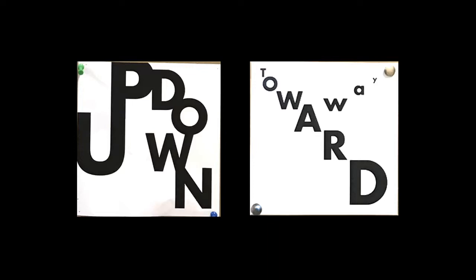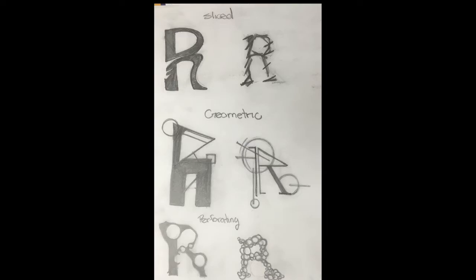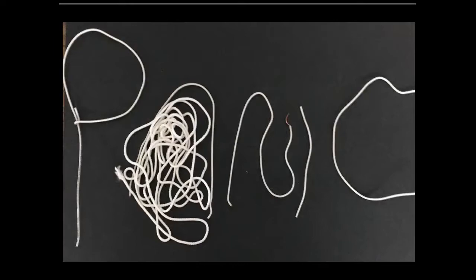This project has students visually communicate two opposite words using only black, regular, or bold type. I usually provide a list of words, but sometimes students create their own. Students learn how type communicates meaning by drawing letters that visually communicate certain words, such as slicing, perforating, geometric, and spattering.